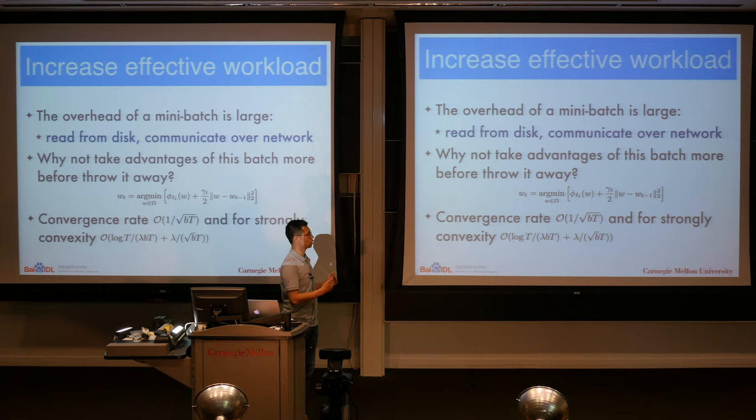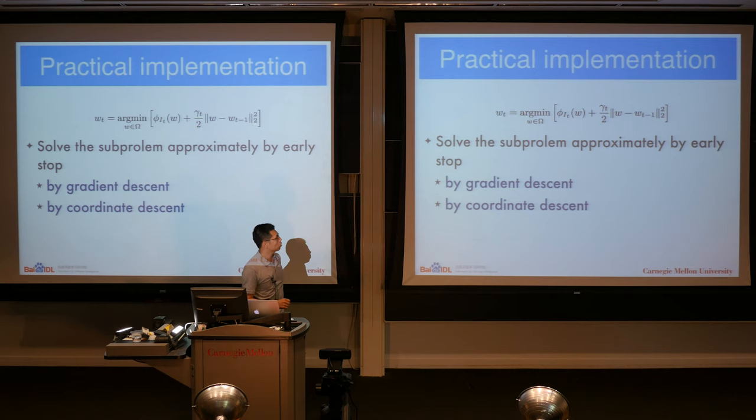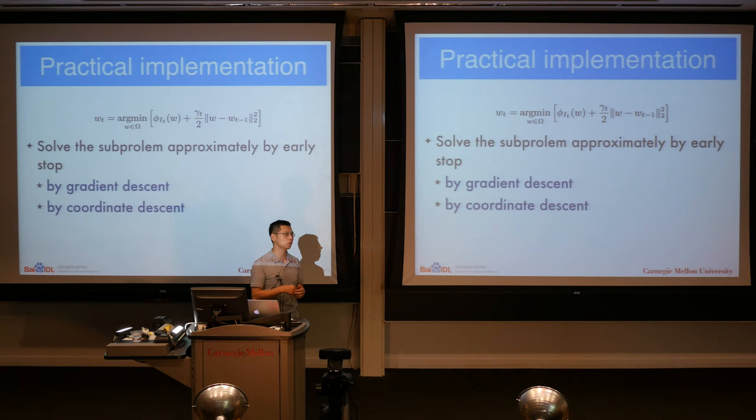In practice, you don't need to solve this subproblem exactly. You can use early stopping — for example, pass the data a few times using gradient descent, or pass the mini-batch a few times using coordinate descent, maybe 5 to 10 passes.